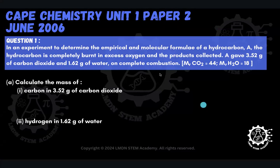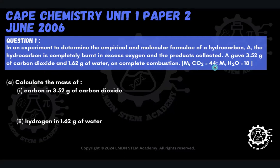This question in particular is from the Cape Chemistry Unit 1 Paper 2 from June 2006. Question one reads: in an experiment to determine the empirical and molecular formulae of a hydrocarbon A, the hydrocarbon is completely burned in excess oxygen and the products collected. A gave 3.52 grams of carbon dioxide and 1.62 grams of water on complete combustion. The relative molecular mass of carbon dioxide is 44, and the relative molecular mass of water is 18.